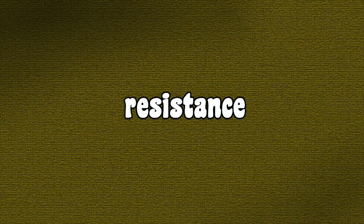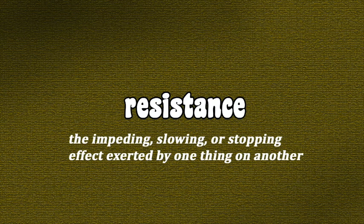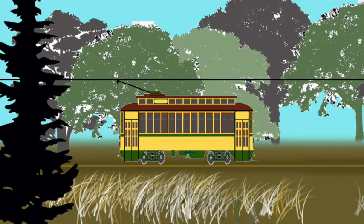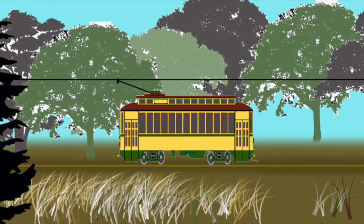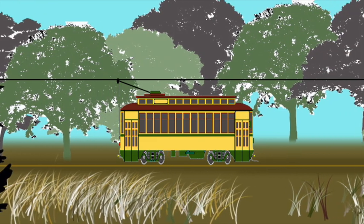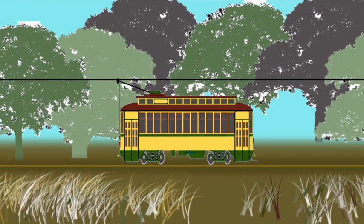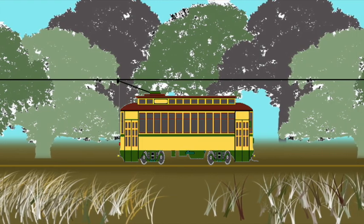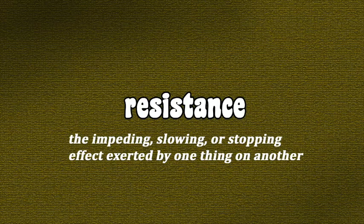Resistance can also refer to the impeding, slowing, or stopping effect exerted by one thing on another. For example, there's resistance in the form of friction between a streetcar's wheels and the rails. That has the effect of slowing the streetcar down. Here's something else that might slow you down.